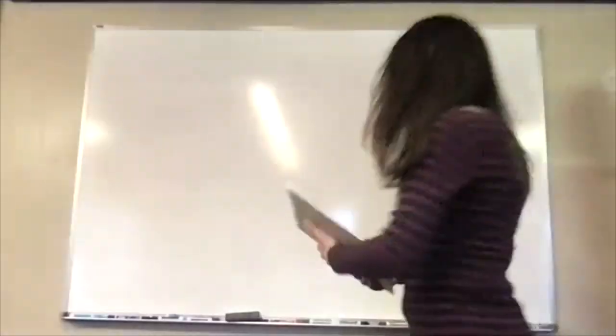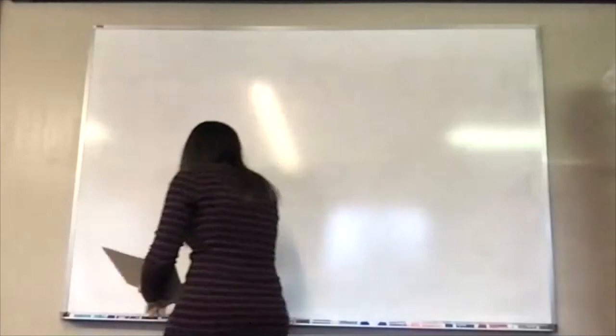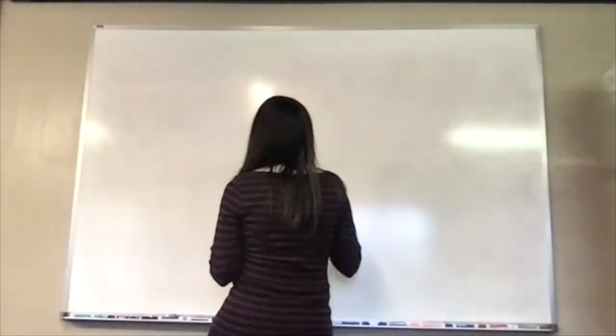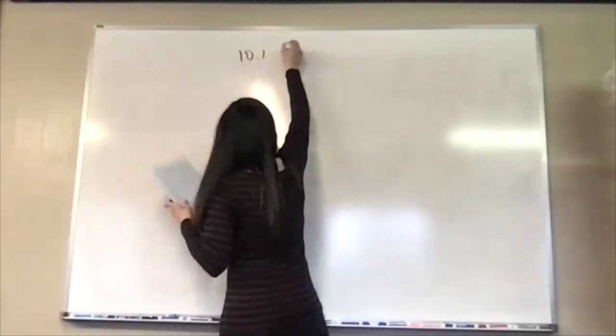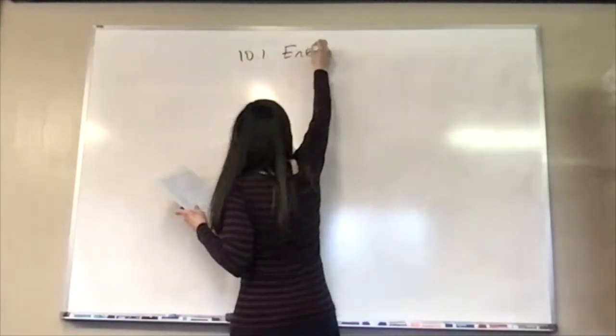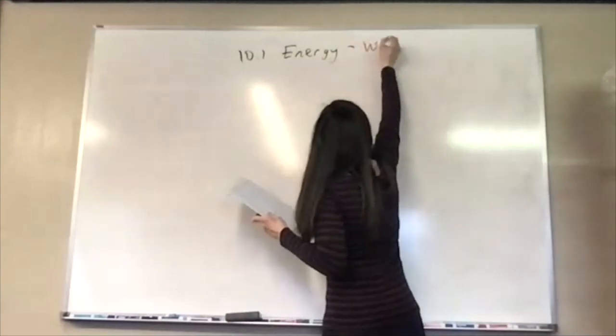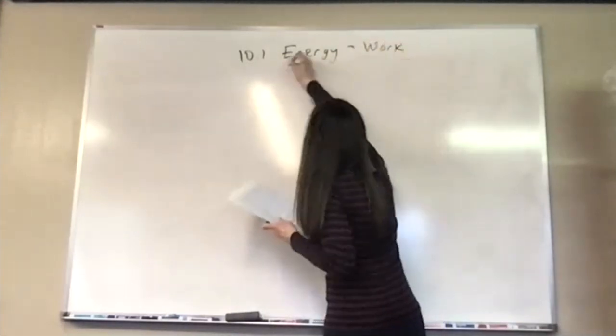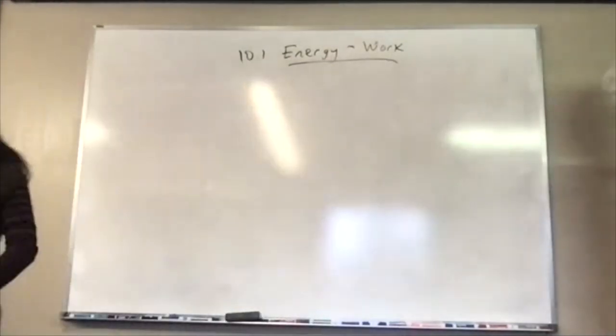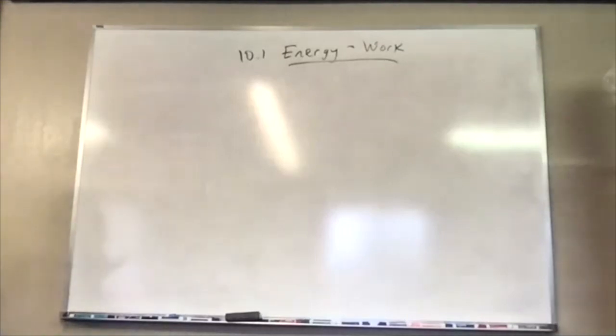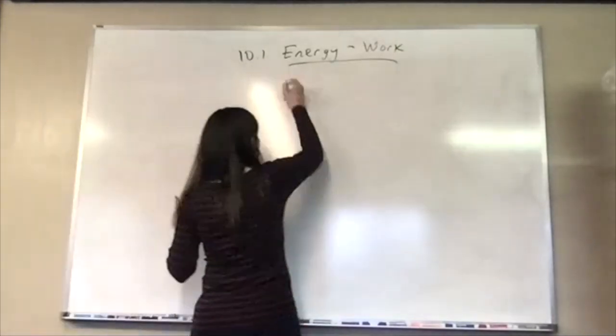OK, so we're on 10.1. This is energy and work. So in the roller coaster lab, they talked about two kinds of energy. Remember what those were? Potential. Exactly right. So we're talking about those potential and kinetic energy.